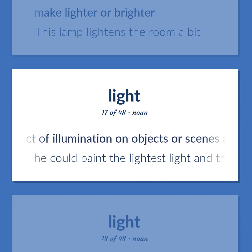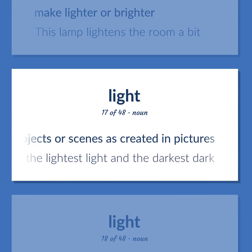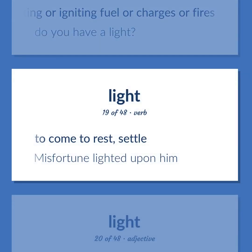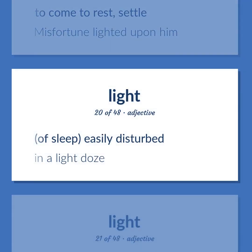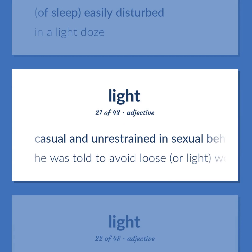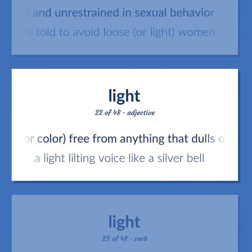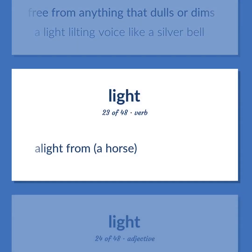The visual effect of illumination on objects or scenes as created in pictures — 'He could paint the lightest light and the darkest dark.' A device for lighting or igniting fuel or charges or fires — 'Do you have a light?' To come to rest; settle — 'Misfortune lighted upon him.' Of sleep, easily disturbed — 'In a light doze.' Casual and unrestrained in sexual behavior — 'He was told to avoid loose or light women.' Of sound or color, free from anything that dulls or dims — 'A light lilting voice like a silver bell.' A light from a horse.